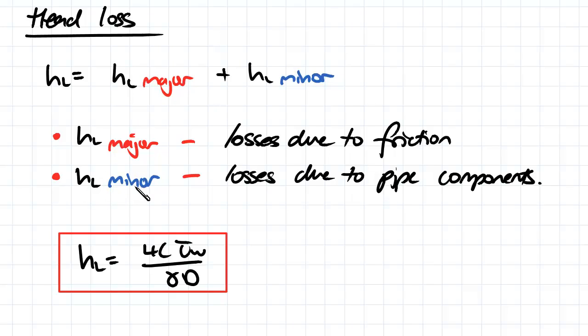We've also got head loss minor and that's losses due to pipe components. For example, valves or elbows or sudden changes in the pipe diameter can lead us to having head loss and that's called the head loss minor. So the head loss is the summation of both of those components.